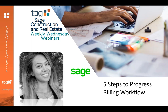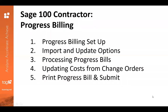Even other construction accounting systems that still don't allow them to automate their progress billing, so they actually have to manually create everything, even though it's a construction accounting system. That's one piece of feedback I get from clients as we're looking at this system. Again, this is going to be a really high-level overview of the steps involved with doing your progress billing in Sage 100 Contractor, broken down into five easy steps.